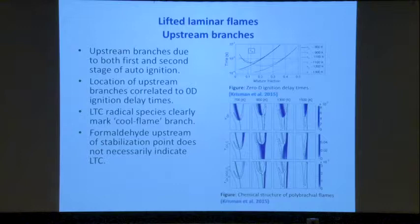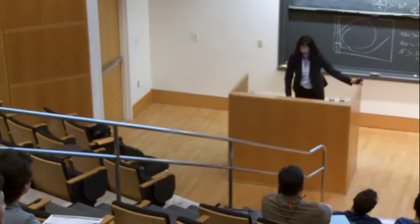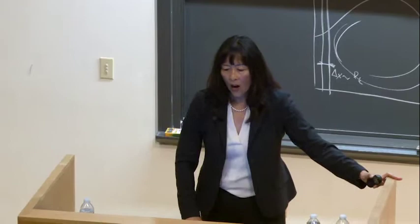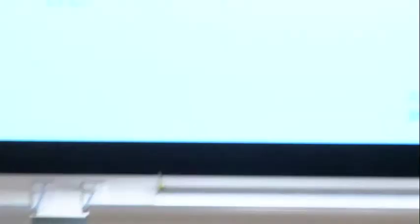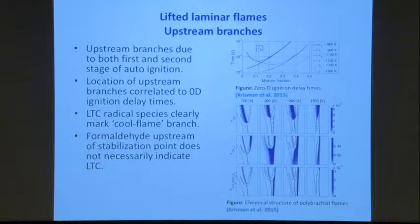In response to a question: the solid line is the stoichiometric mixture fraction and the dotted line is the extremely lean mixture fraction — about 0.01 mixture fraction — practically out in the oxidant where reactions are barely occurring.